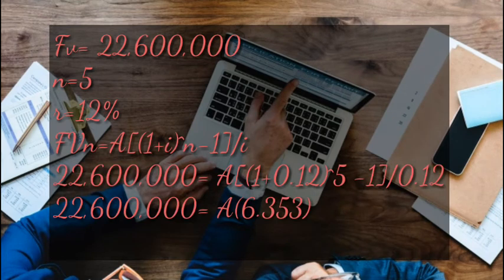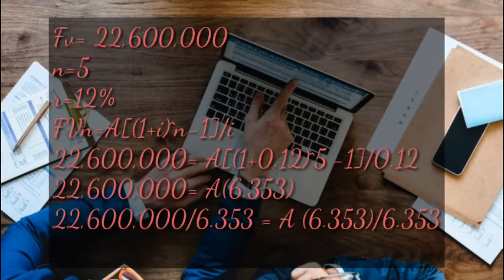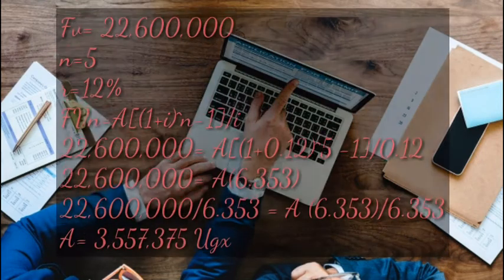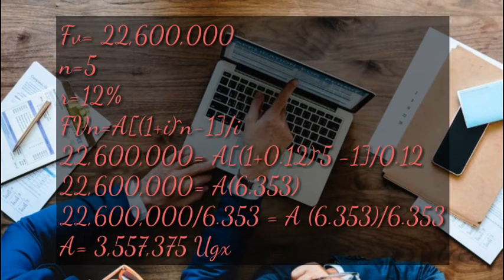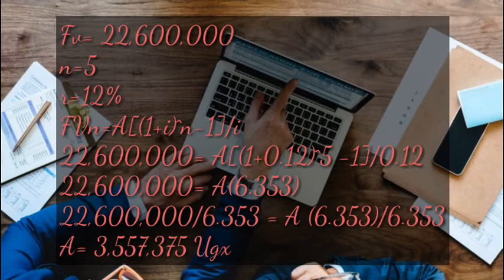When we multiply everything in the brackets and subtract, we get 22,600,000 equals A into 6.353. Dividing both sides by 6.353 to find the value of A, we get 3,557,375 Uganda shillings. That is the money John is supposed to deposit in his bank account every year in order to accumulate 22,600,000 after five years — that is the annuity.